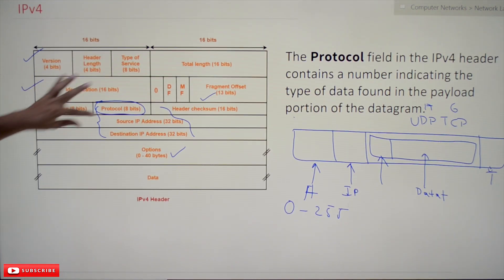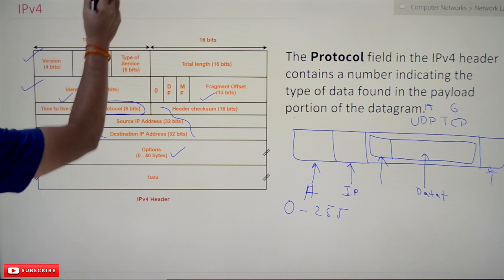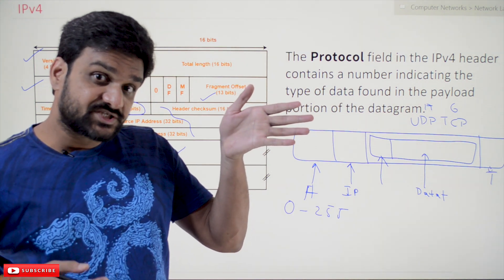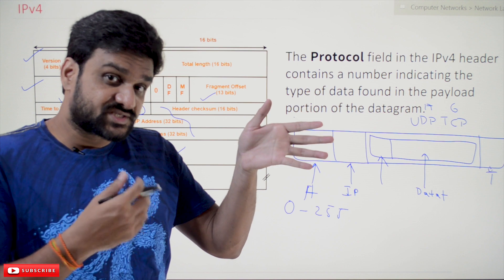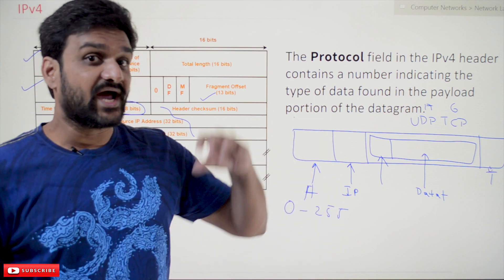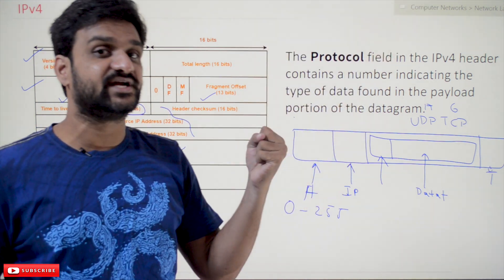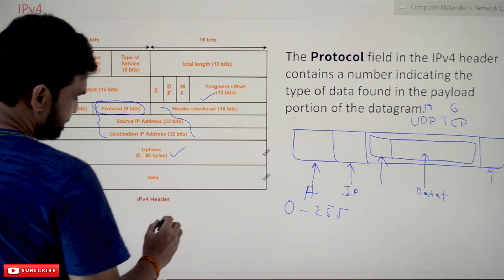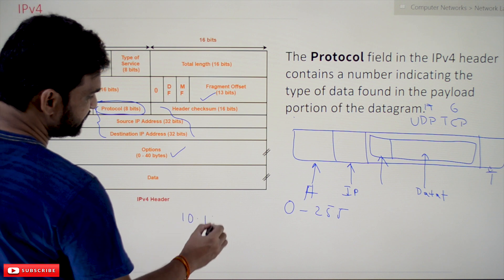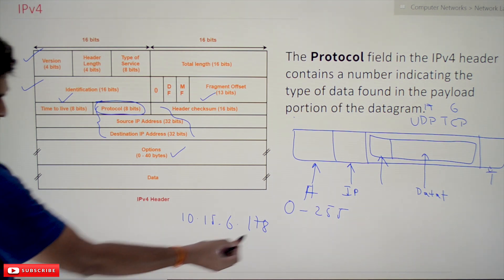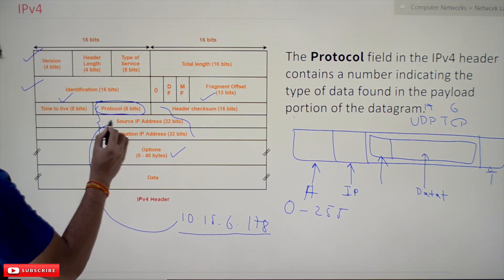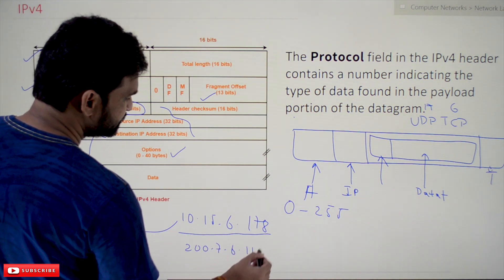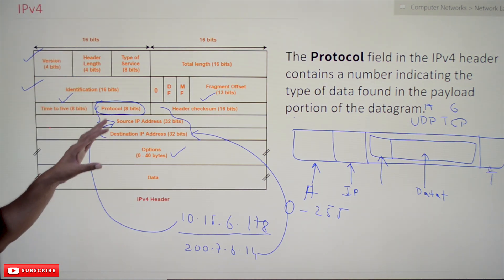Next is the source IP address field. As discussed in previous classes, an IP address is 32 bits. The computer transmitting the data is the source, and the computer receiving it is the destination. Their IP addresses are accommodated in these two fields. For example, if the source IP address is 10.15.6.178, it goes into the source IP field; and if the destination IP address is 200.7.6.14, it goes into the destination IP address field.